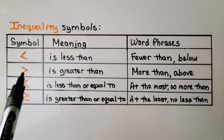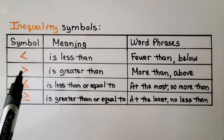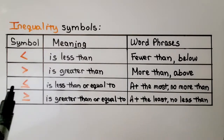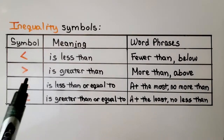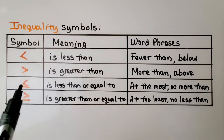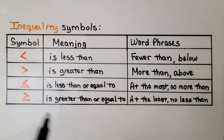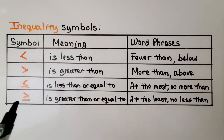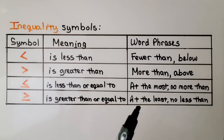We have the 'is greater than' symbol, which means more than or above. The symbol with a line under it is 'less than or equal to,' meaning at the most, no more than. And 'greater than or equal to' means at the least, no less than.